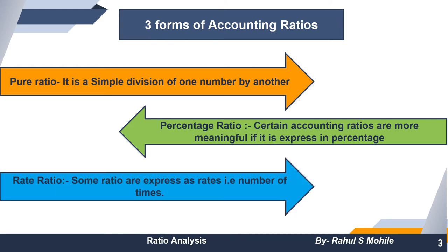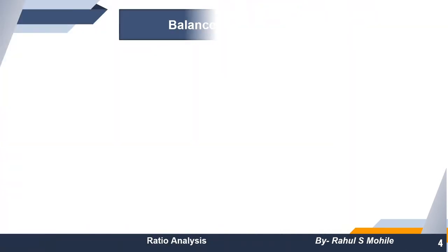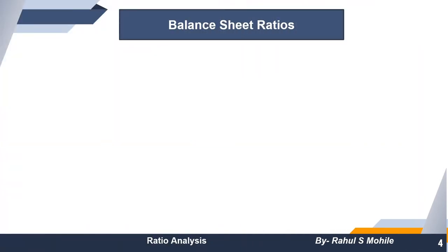The third type of ratio is the rate ratio. It is expressed on the basis of number of times. For example, debtors turnover ratio, creditors turnover ratio, and stock turnover ratio — all these ratios express the number of times. Now we will look at the formulas. There are quite important formulas, and along with the formulas I have also written the standards so you can remember them.